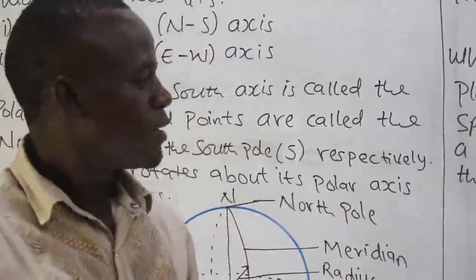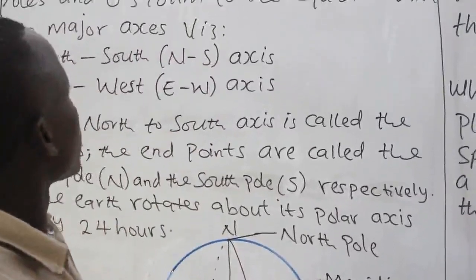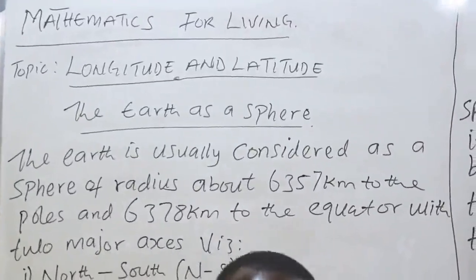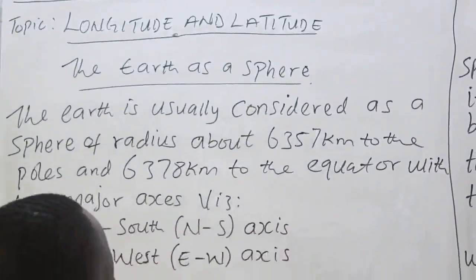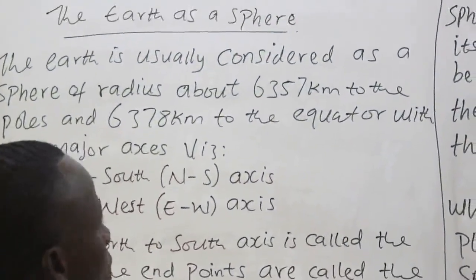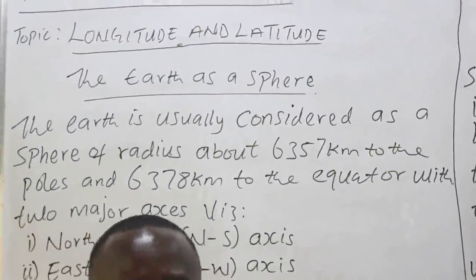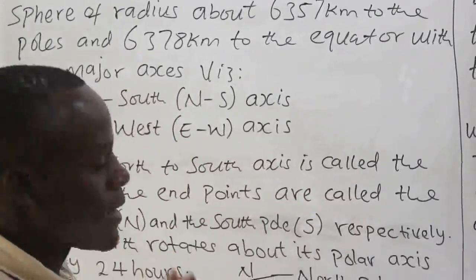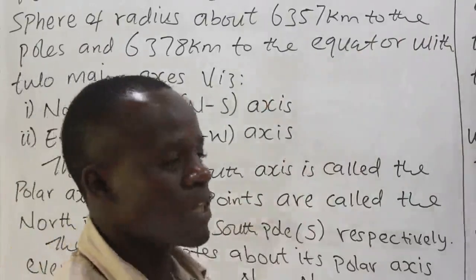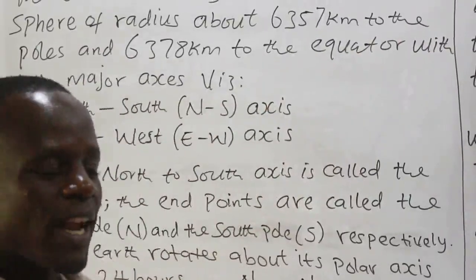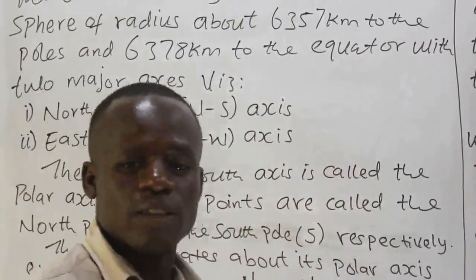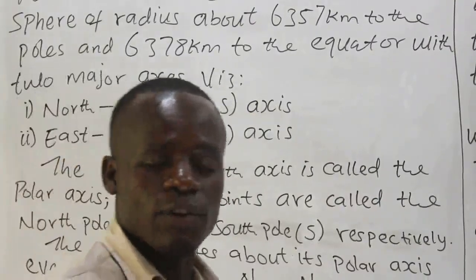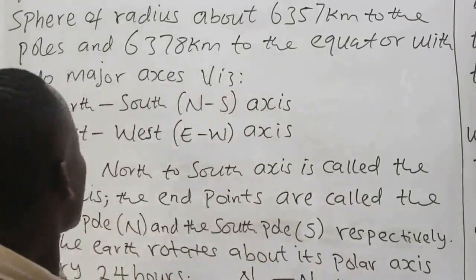Good day everyone, welcome to this lesson in mathematics. We are going to concentrate on the topic longitude and latitude. Before we proceed, we'll talk a little about the earth. By the end of this lesson, we should be able to describe the earth as a sphere, differentiate between great circle and small circle, identify the lines of longitude and latitude on the surface of the earth, and calculate the distances between places on the surface of the earth.